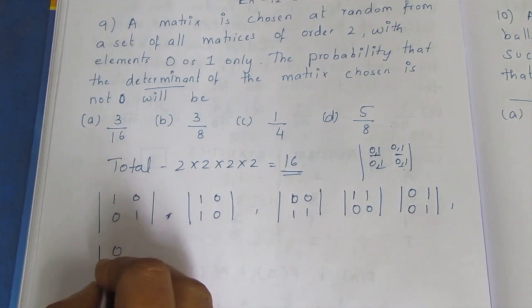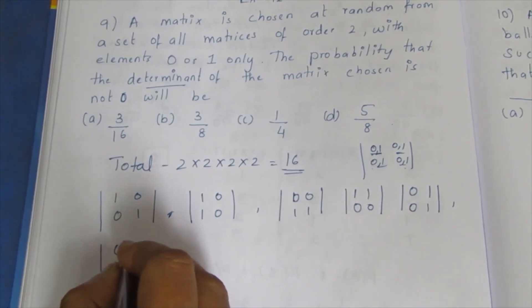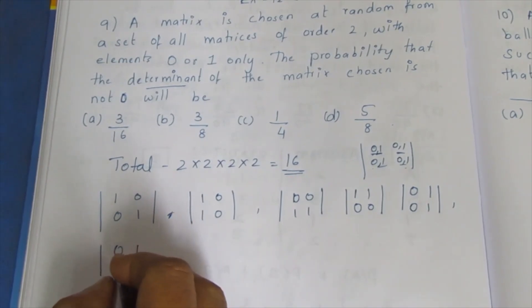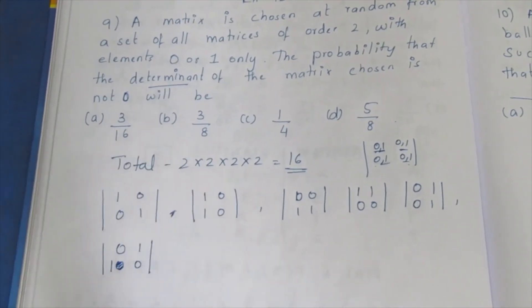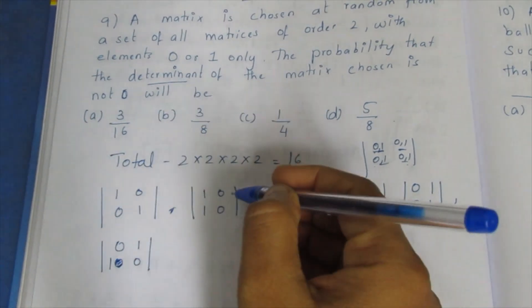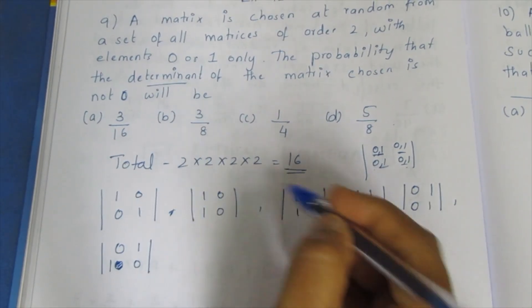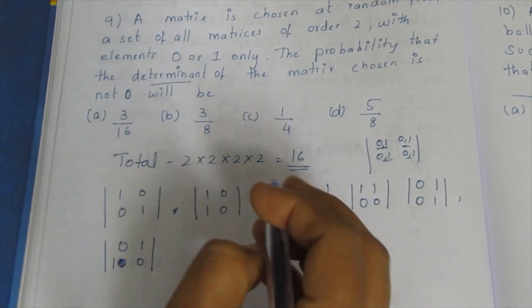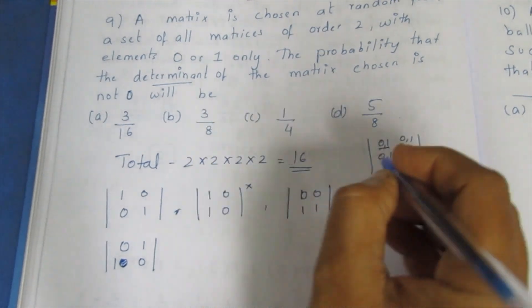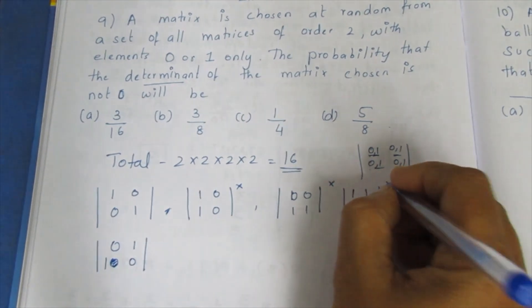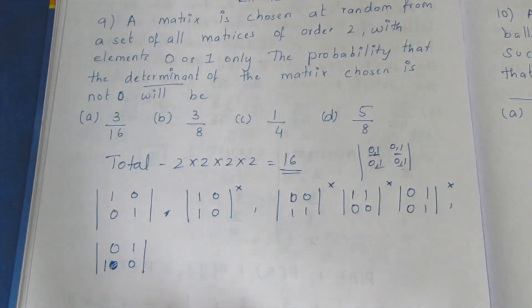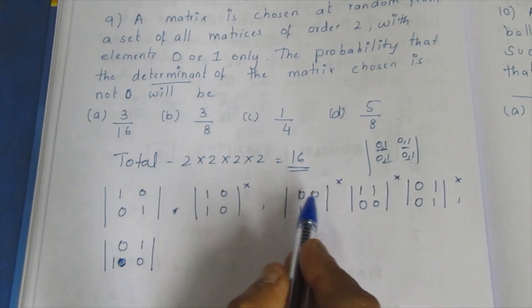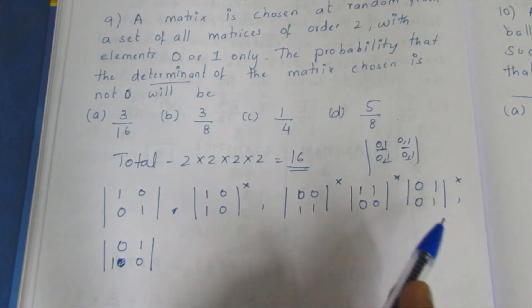Now let's look at the matrices. Consider entries like 0, 0, 1, 1, 0, 1, 0. When you multiply by the same column, the determinant will be 0.